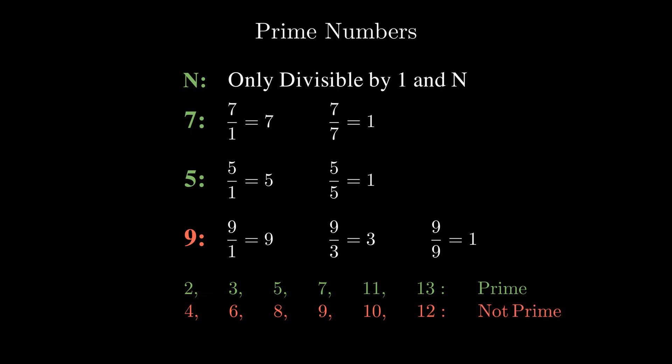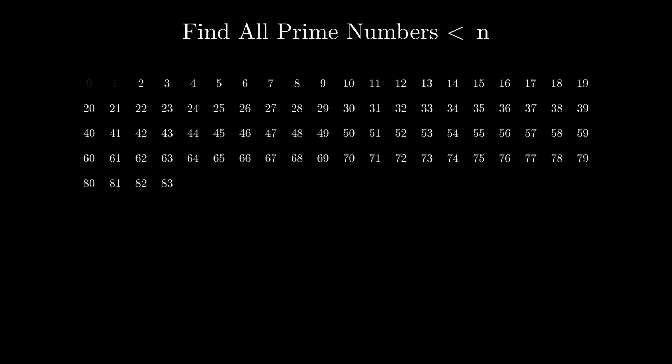Now, given some large number n, what would be the most efficient way of finding all the prime numbers smaller than n? This is the exact problem that Eratosthenes solved such a long time ago.